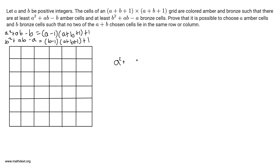We wish to prove that it is possible to choose A amber cells and B bronze cells so that no two of those chosen cells lie in the same row or column. But I'm going to go a little bit farther than that. Instead of choosing A+B cells, A of them amber and B of them bronze, I'm going to choose A+B+1 cells so that no two of the cells lie in the same row or column — I don't care what color those cells are. I'll just draw the diagonal and label each diagonal square with a 1. I'm going to define a band as a set of A+B+1 squares such that no two of them are in the same row or column.